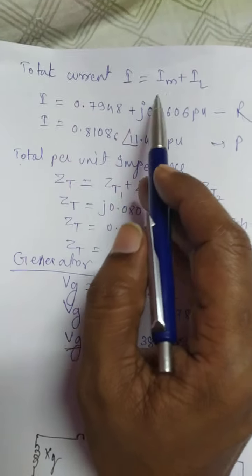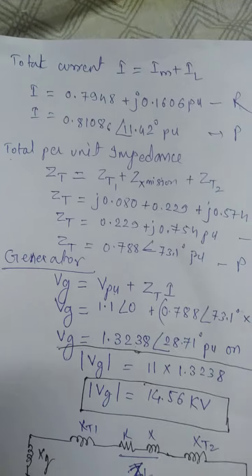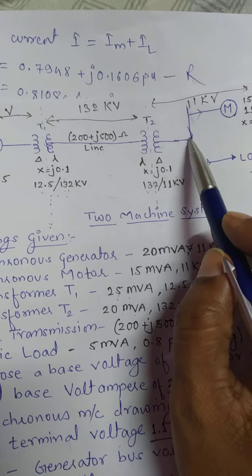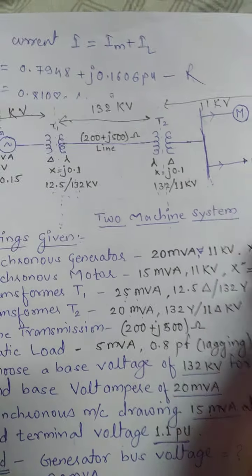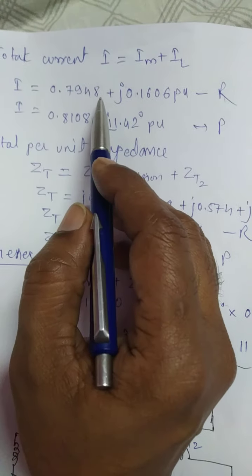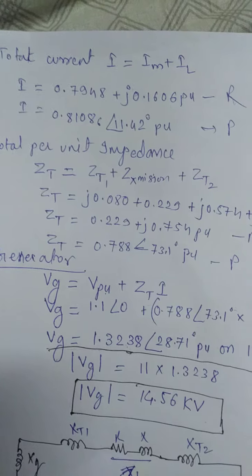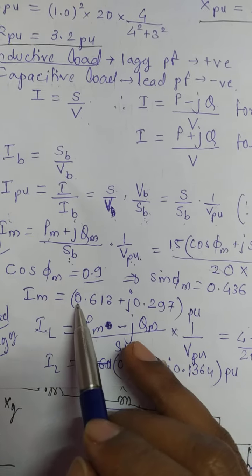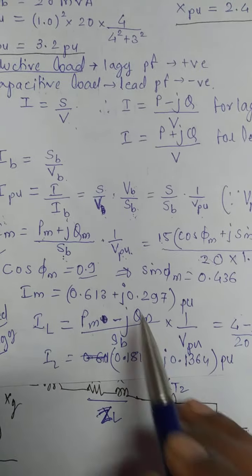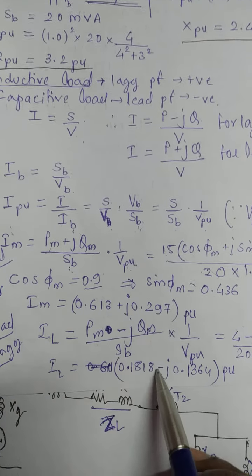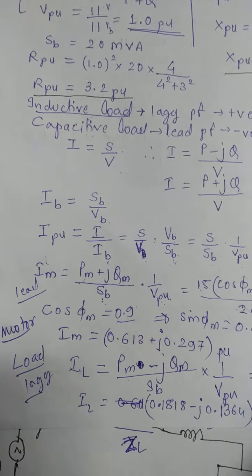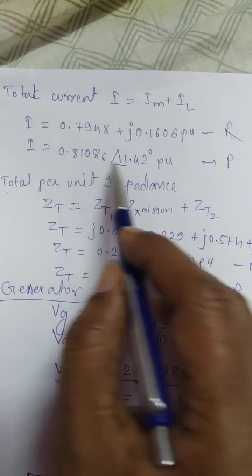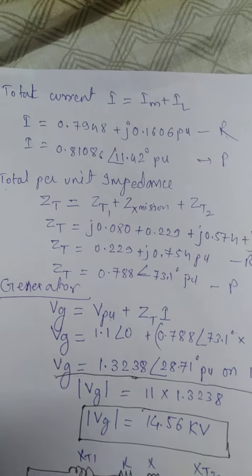The total current I equals IM plus IL. In this diagram there is a transformer, and the total current is divided into the motor and load at 11 kV. Therefore the total current will be 0.7948 plus IM, which you already calculated as 0.63. Adding this load current and motor current gives the total current. This is the rectangular value of the total current and this is the polar value.